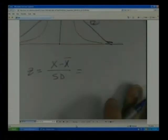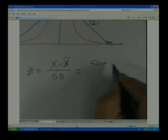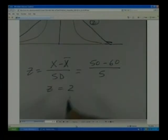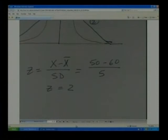We have a value of 50, the mean is 60, and the standard deviation is 5. So that would tell us that our z-score is going to be equal to -2. We'll see how we use that in just a minute.